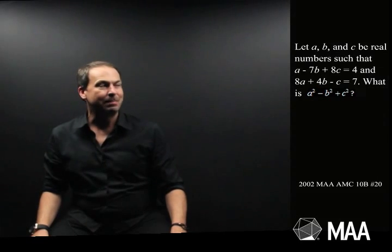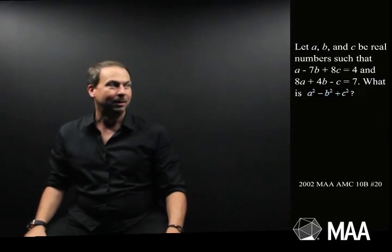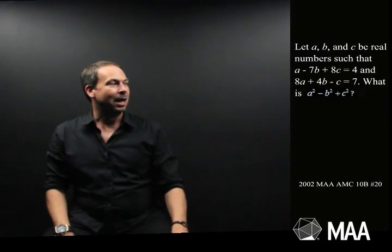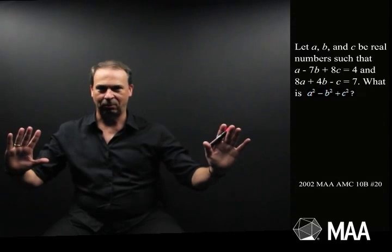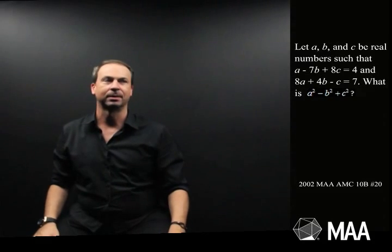Let a, b and c be real numbers such that a minus 7b plus 8c equals 4 and 8a plus 4b minus c equals 7. So yes, this is an algebra question. Okay, we've got two equations in those three variables. The question is what is a squared minus b squared plus c squared.